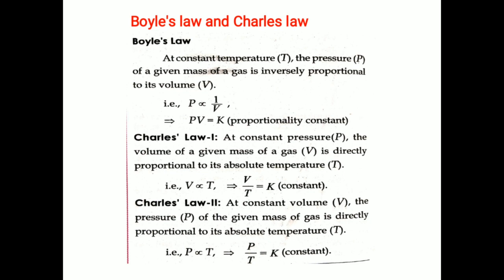Charles' second law: at constant volume, the pressure of a given mass of gas is directly proportional to its absolute temperature. That is, P is proportional to T, therefore P by T equals constant. The only difference between Charles' first law and second law is: Charles' first law relates volume and temperature keeping pressure constant, and Charles' second law relates pressure and temperature keeping volume constant.